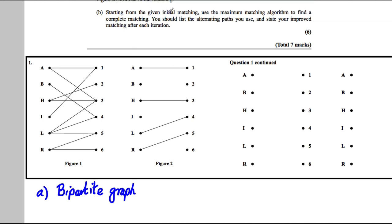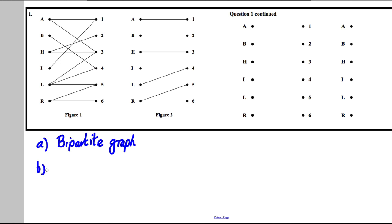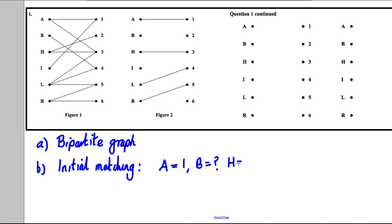The question says: starting from the given initial matching, use the matching algorithm to find a complete matching. You should list the alternating paths you use and state your improved matching after each iteration — which suggests there are going to be two iterations. The first thing you always do is state your initial matching. This is just a copy from your answer booklet. So: A is with 1, B is unmatched, H is with 3, I is unmatched, L is with 4, and R is with 5.